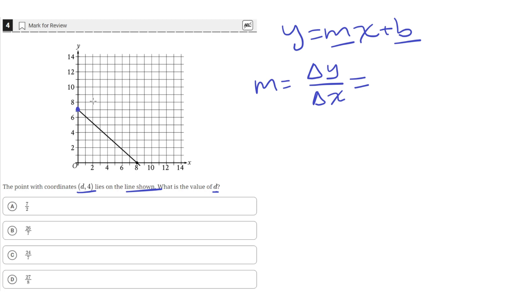Let's use this point here, which is (0, 7), and this point here, which is (8, 0).